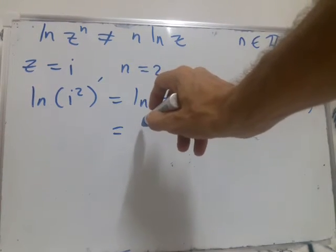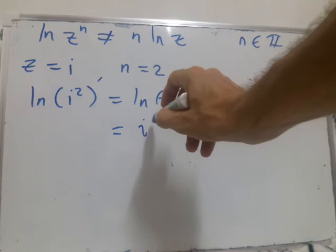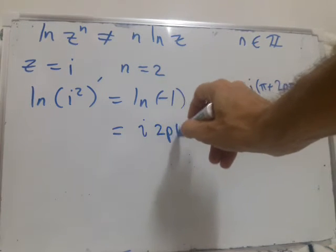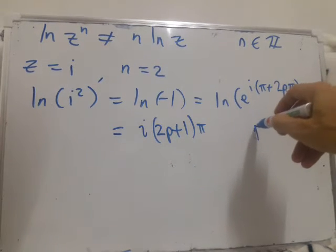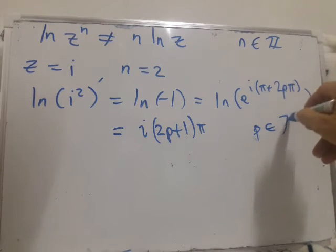Which is just i times 2p plus 1 pi, where p is any integer.